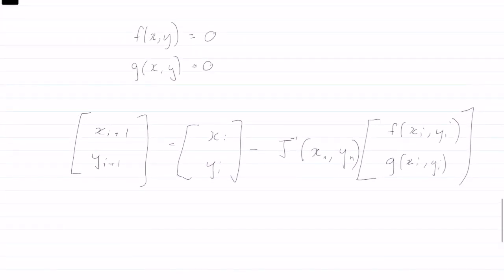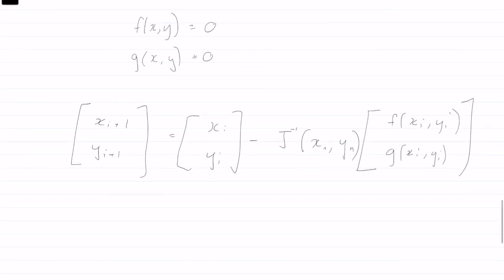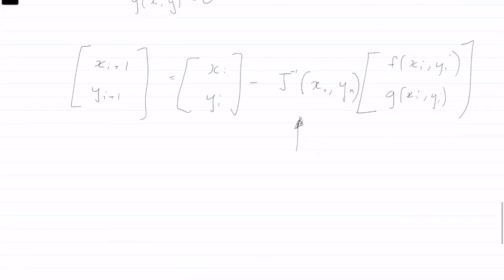Let's just dissect this. So this is the next iteration. This is the iteration that we're at, the Jacobian. Let us define the Jacobian.